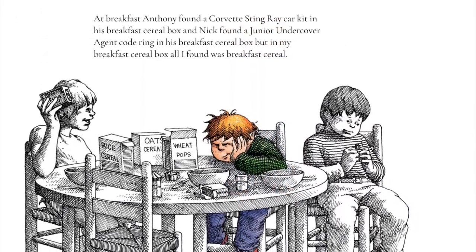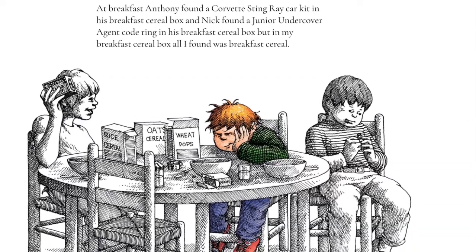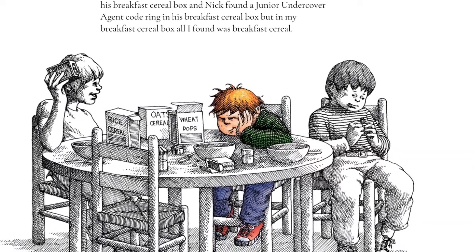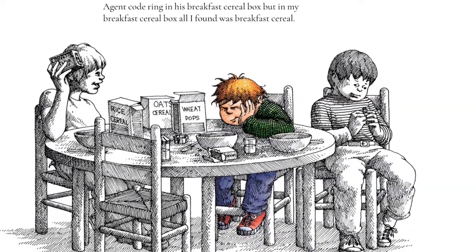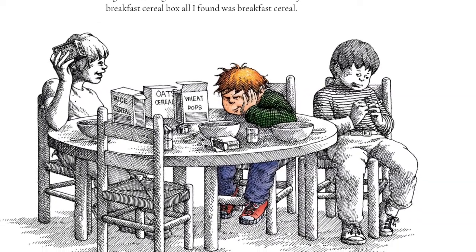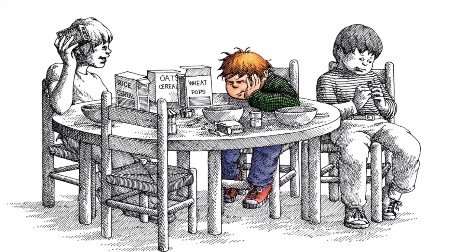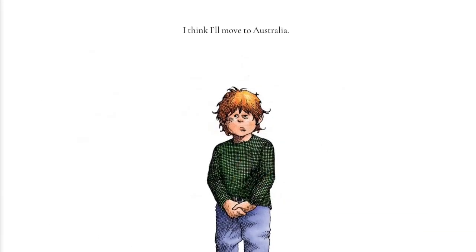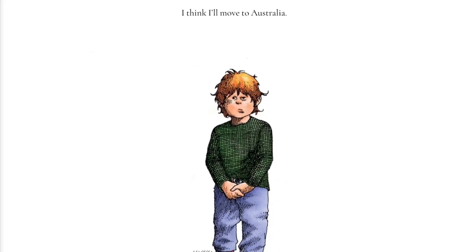At breakfast, Anthony found a Corvette Stingray car kit in his breakfast cereal box and Nick found a Junior Undercover Agent code ring in his breakfast cereal box. But in my breakfast cereal box, all I found was breakfast cereal. I think I'll move to Australia.